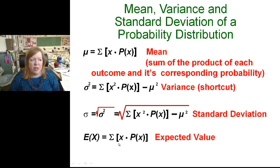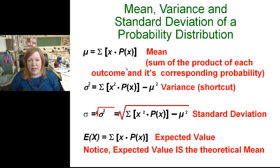Last, the new term is expected value, but if you notice, this looks just like this. The expected value of a probability distribution is just the mean, it's the theoretical mean. So now you have your formulas written down at the top of your notes.